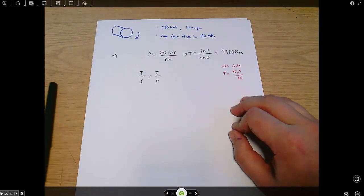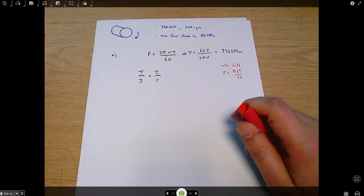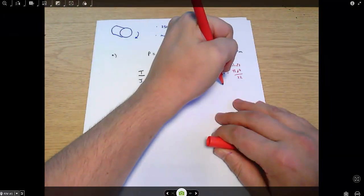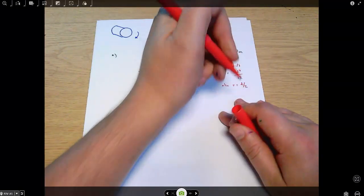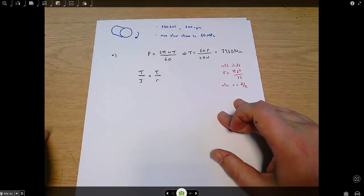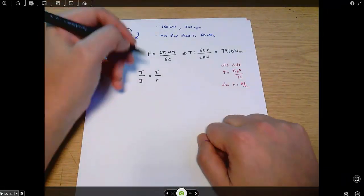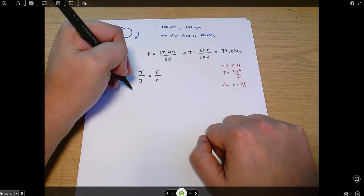The other thing to note is that R equals d over 2. Radius is half of diameter. It's worth being clear where everything's going to come from because I'm about to start substituting in.